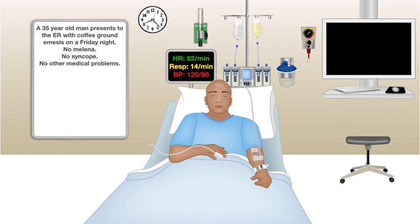When you look at his vitals: heart rate of 82 per minute, respirations 14 per minute, and blood pressure of 120 by 80 millimeters of mercury. Labs look good — hemoglobin 14 grams per deciliter, BUN 15 milligrams per deciliter, and the rest of the labs look normal.